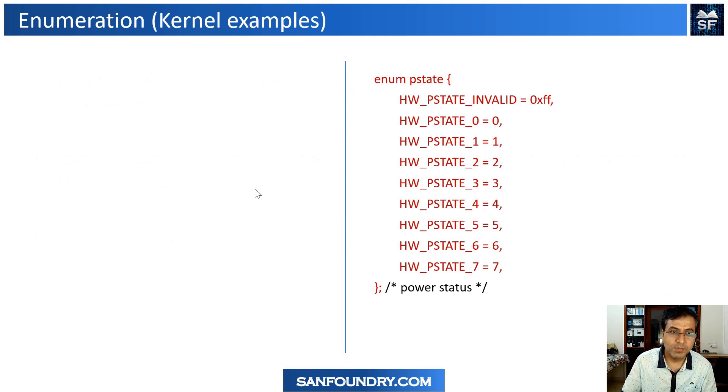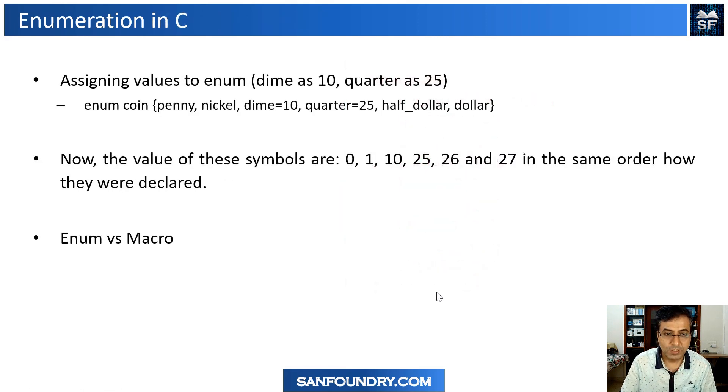Now let's look into some examples of enums. I have got few examples where we are using it in the kernel. Sometimes you can see this particular example about enums, where we are talking about the status of the power status, the hardware power status. We can define a state as 0, 1 up to 7, and then maybe some invalid states. Here it's just creating an enum and the name of that type is state, power state. This is one place where you can make use of enum as one choice.